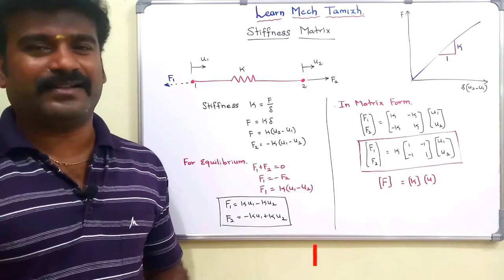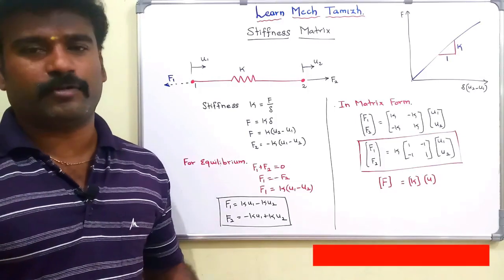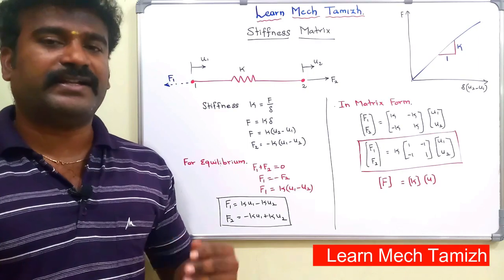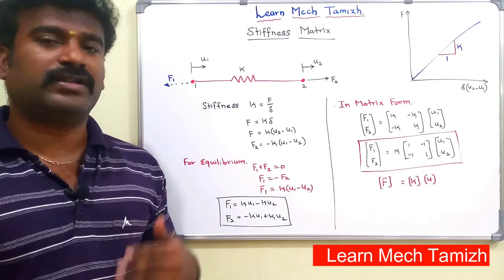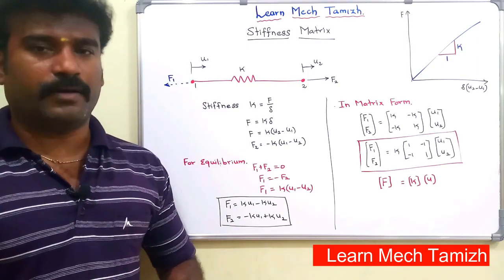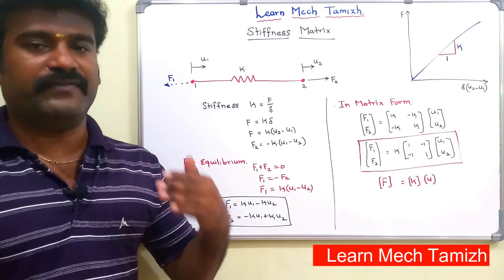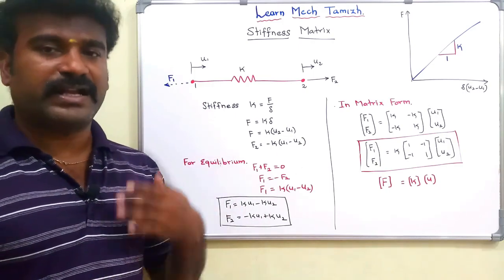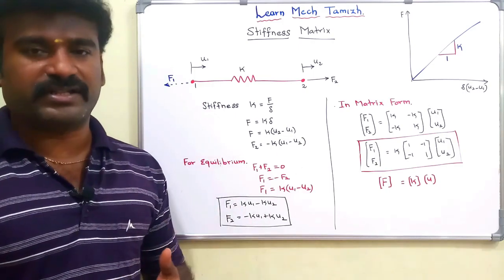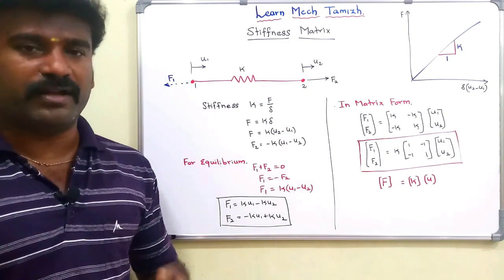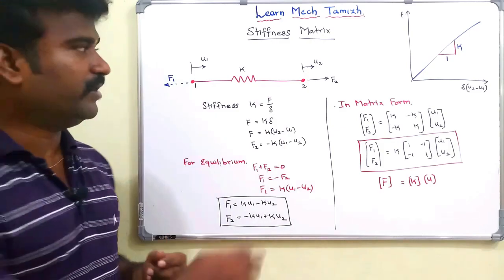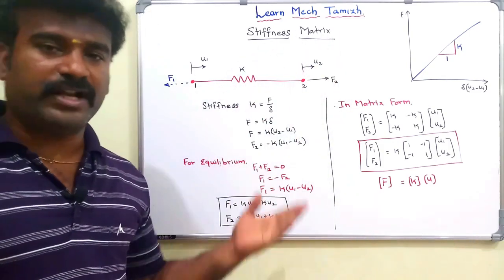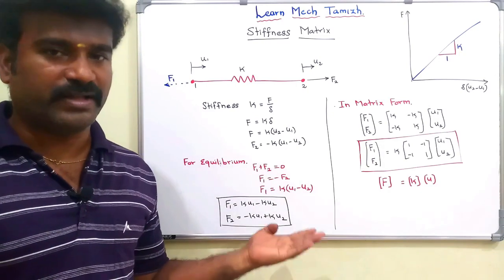Hi friends, welcome to my channel. Today we will talk about the topic of stiffness matrix. In finite element analysis, one-dimensional and two-dimensional problems have unknown field variables like displacement, temperature, and natural frequency. One key term is the stiffness matrix. Why do we use this term? We will talk about it in this video.